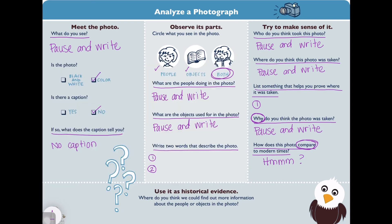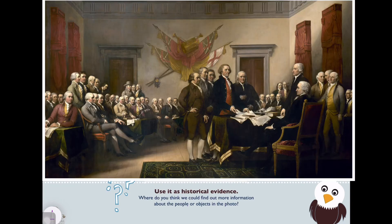Write all of these things down. The last section of our worksheet says: where do you think you can go to get more information about the people or objects in this photo? Well, you can start by looking up Declaration of Independence by John Trumbull — that is the name of this painting.